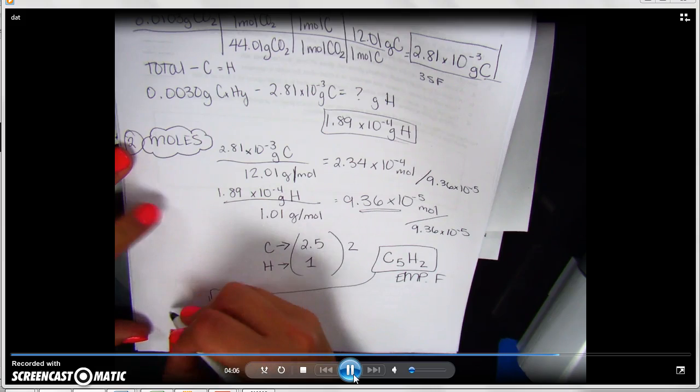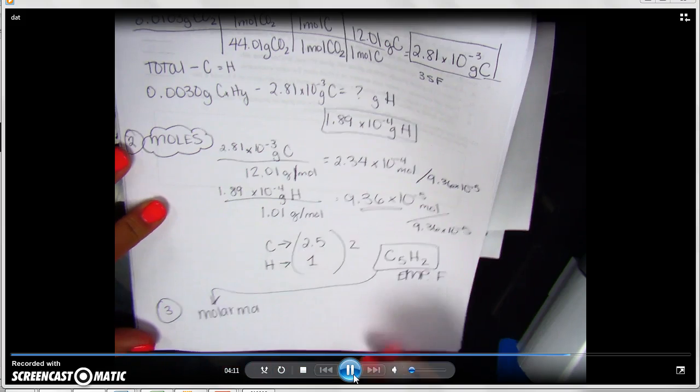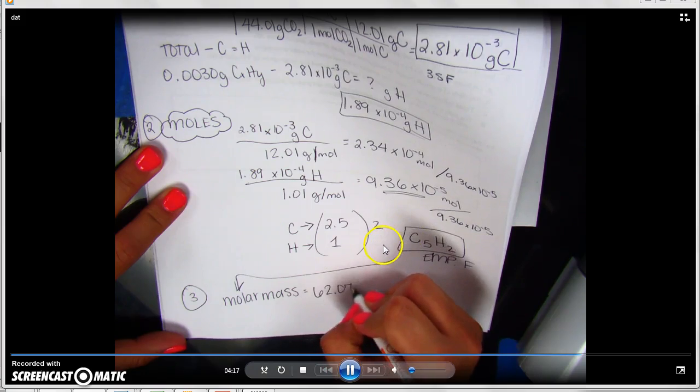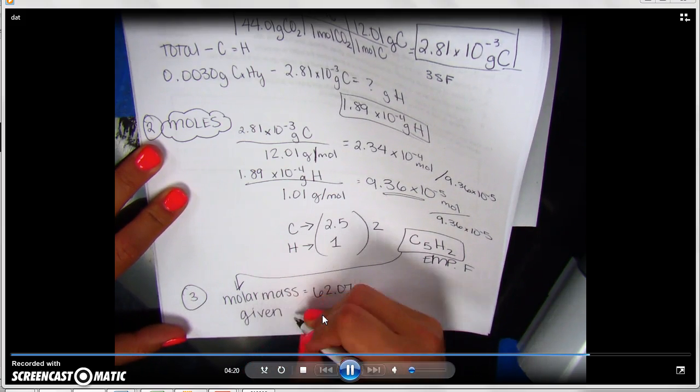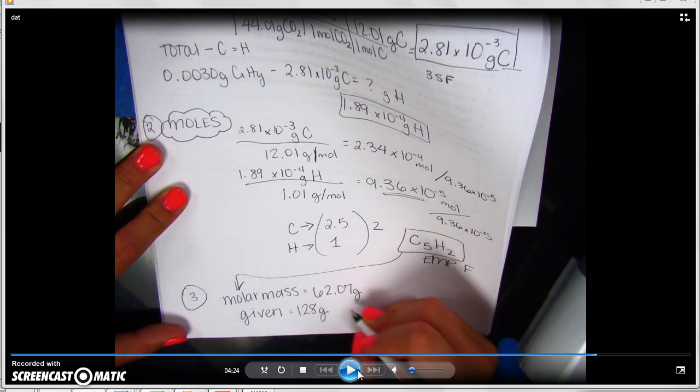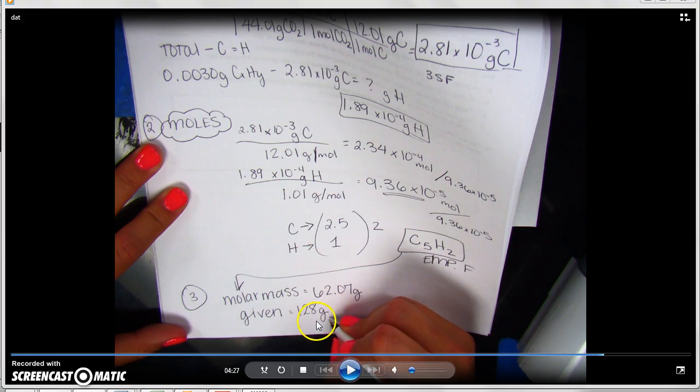Now, they also want us to turn around and find molecular formula. So what we're going to do is we're going to get the molar mass of C5H2 using our periodic table, and we get that to be 62.07 grams. Given to you in the problem, they said that we had 128 grams of this stuff, this naphthalene. When you look here, we can see that it is a ratio that it needs to be doubled in order to reach somewhere around 128.